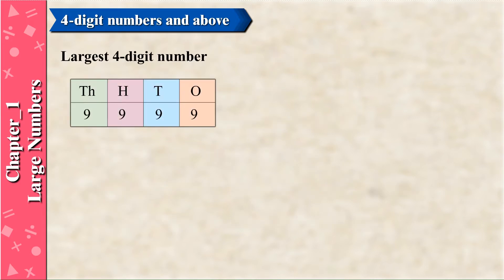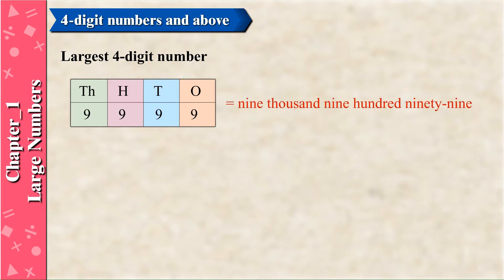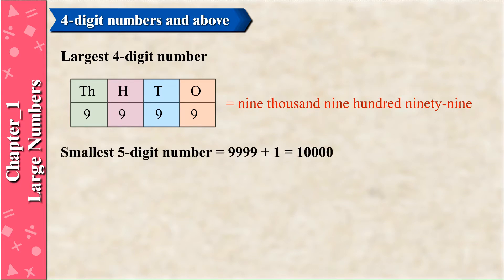The largest four-digit number is 9999 (TH=9, H=9, T=9, O=9). The smallest five-digit number is equal to 9999 plus 1, which equals 10,000.